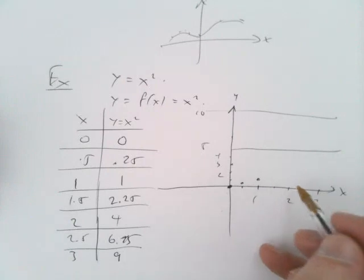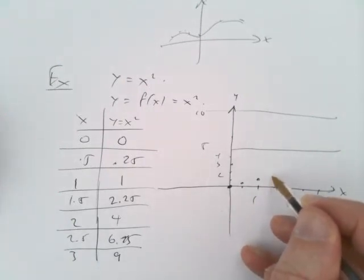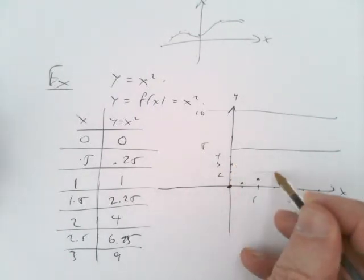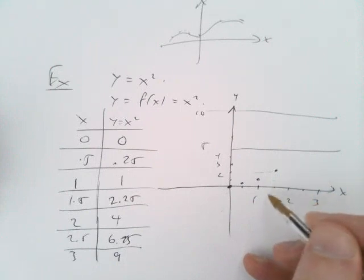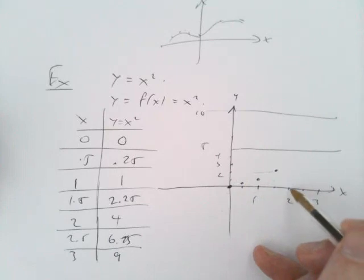So then we've got 1.5 goes to 2.25, that's somewhere around here maybe. I'm not trying to be very accurate. It doesn't matter a great deal just to get a sense of what we're doing.